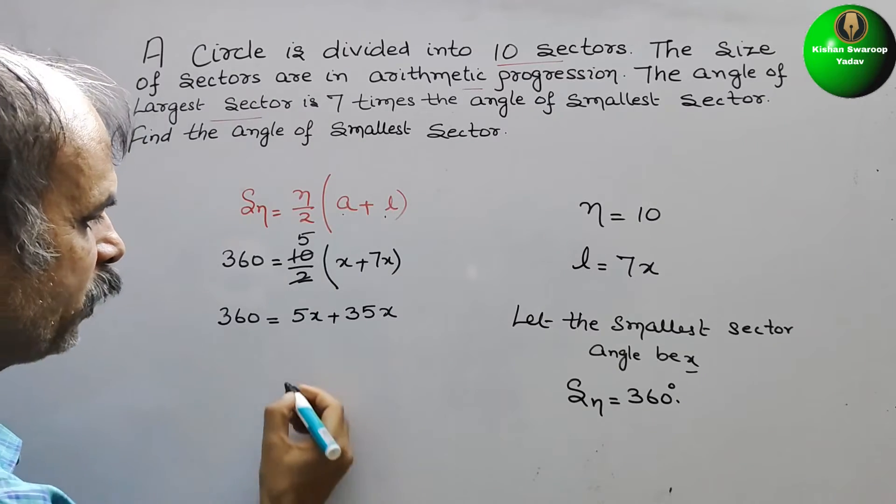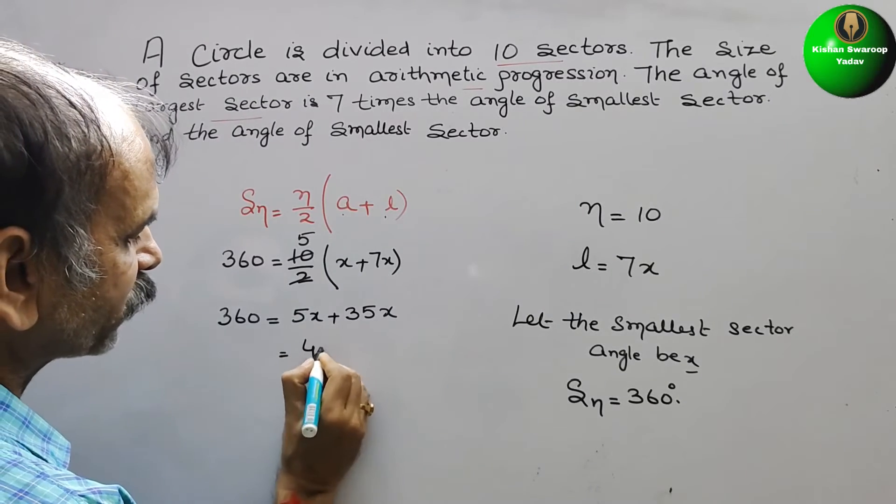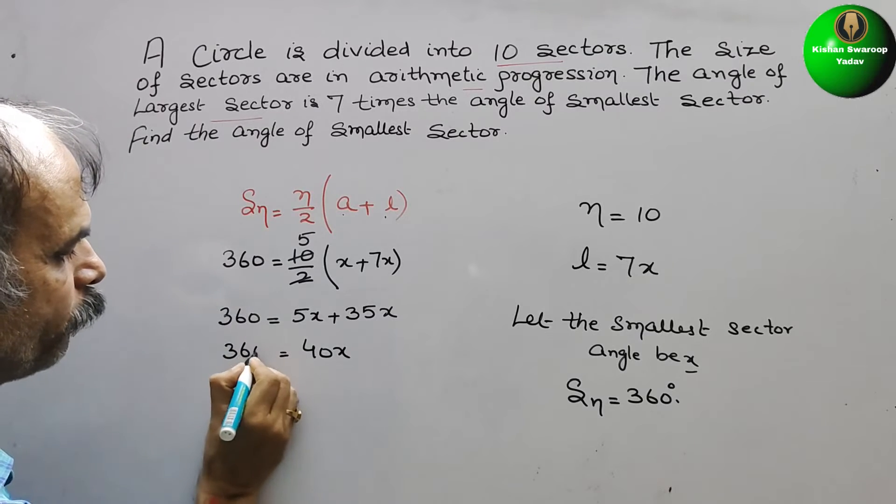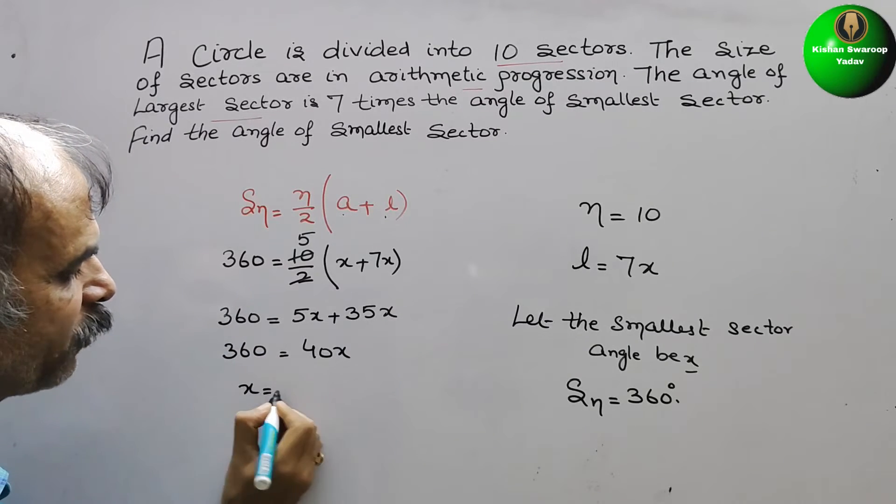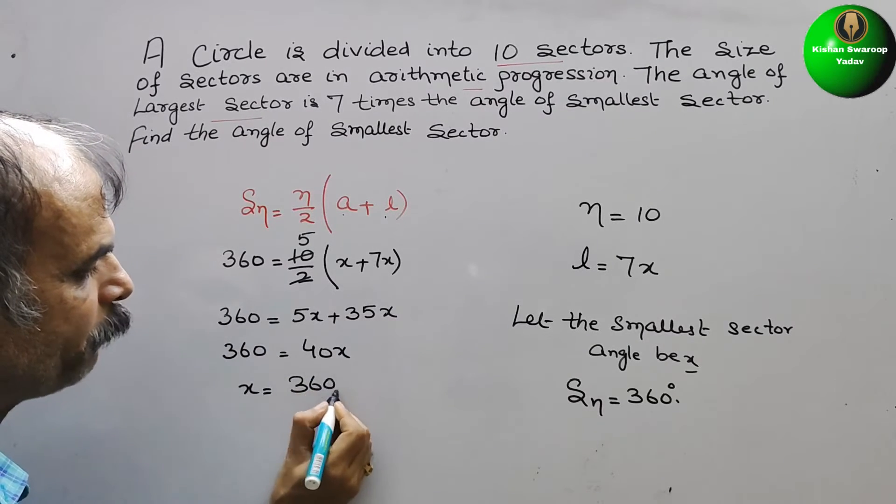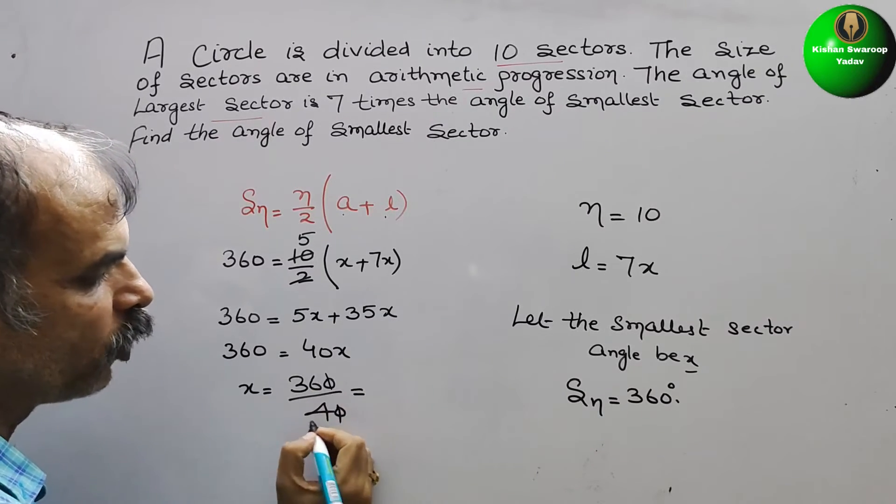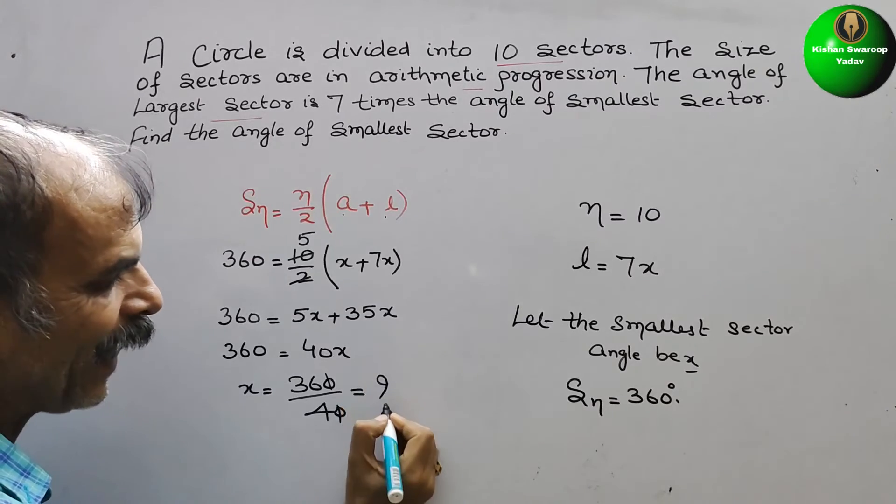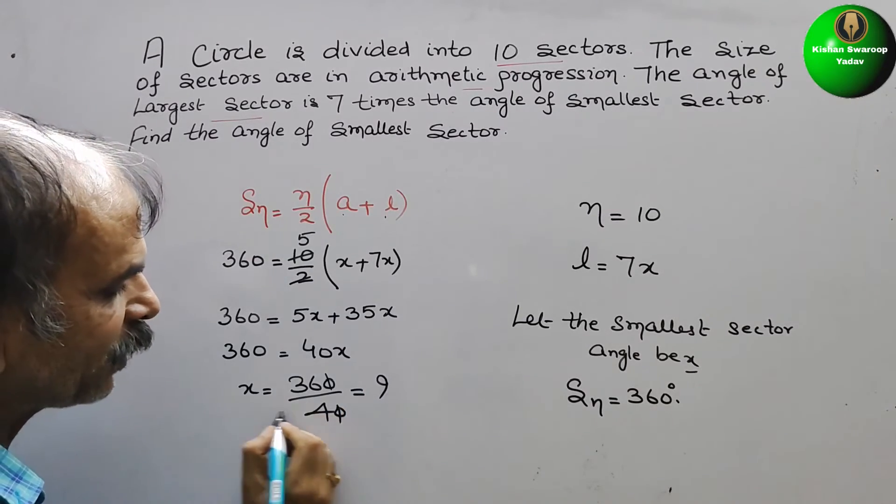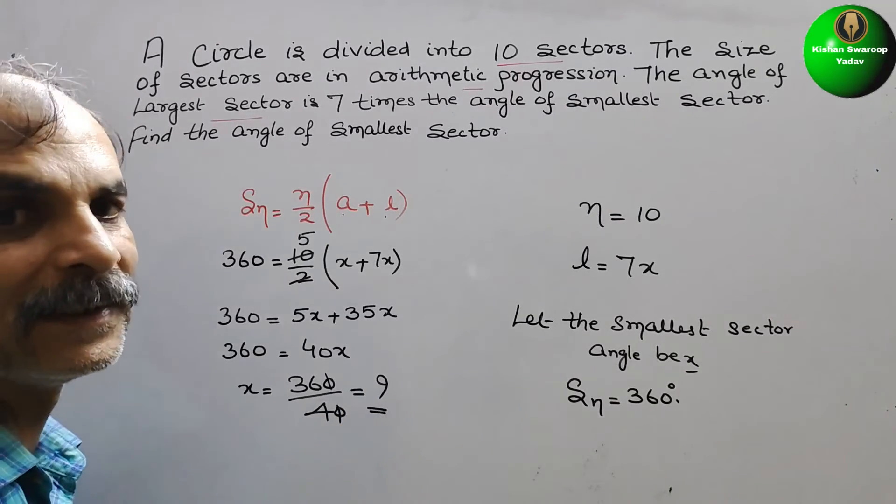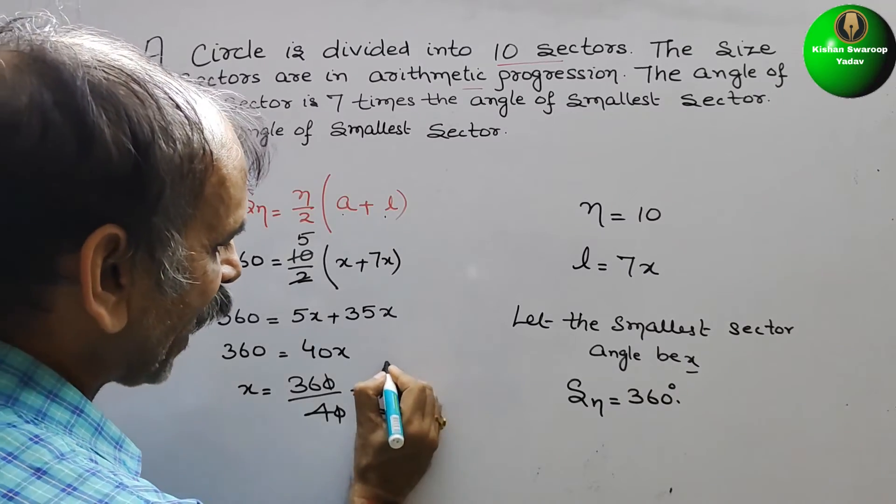So this is nothing but 40x is equal to 360 degrees. So now x is equal to 360 degrees by 40. That is equal to, zeros gone, it goes 9 times. So we can say the smallest sector angle is 9 degrees.